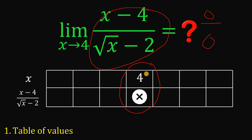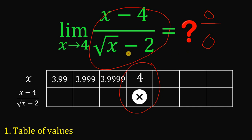To find the limit, we need to know what happens to this function coming from the left side going to 4. So let's use values 3.9, 3.99, and 3.999 — these cannot equal 4 because we'd get 0 over 0. We also need to know what happens coming from the right side of 4, so we use 4.01 and 4.001, which also cannot equal 4.